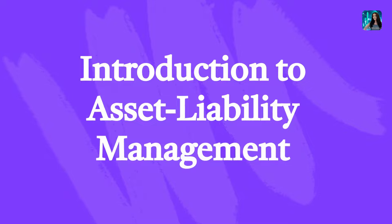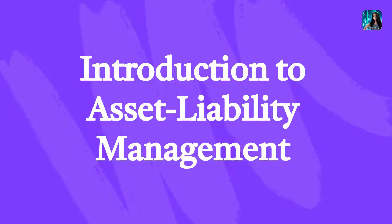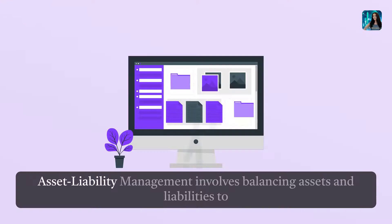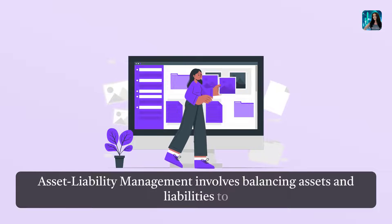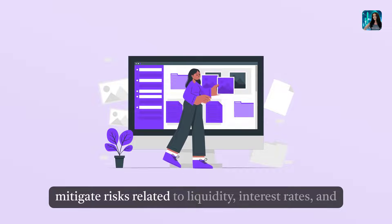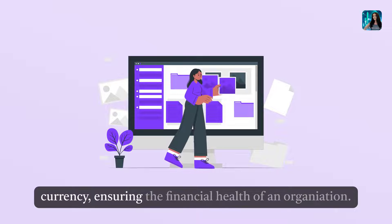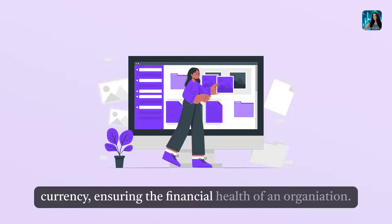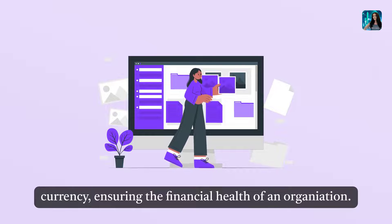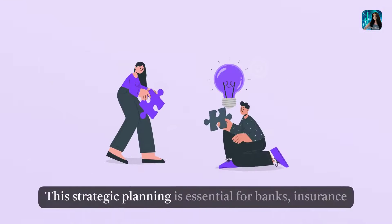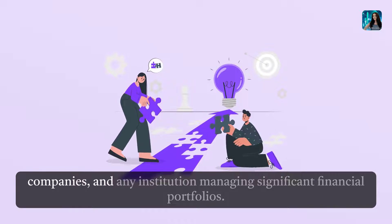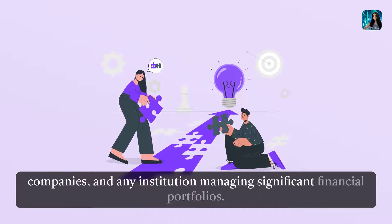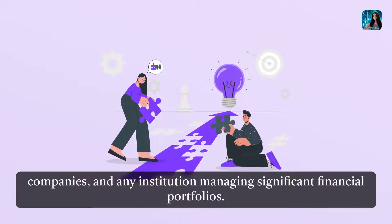Introduction to Asset Liability Management. Asset Liability Management involves balancing assets and liabilities to mitigate risks related to liquidity, interest rates, and currency, ensuring the financial health of an organization. This strategic planning is essential for banks, insurance companies, and any institution managing significant financial portfolios.